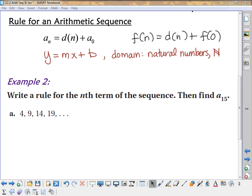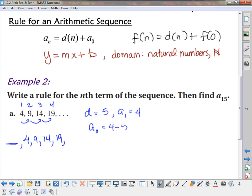So let's look at an example. We're going to write the rule for the nth term of the sequence. And then we're going to find a sub 15. So these are my first, second, third, fourth term, and so on. And so what's happening on this one? We're adding 5. So my difference is 5. And I know a sub 1 is equal to 4. So if I think about, what if I went backwards and found the one that came before 4? What would I do? I would subtract 5. I would take that 4 and I would subtract the 5 from it. So that's what you do to figure out what your a sub 0 is. And in this case, it would be negative 1.